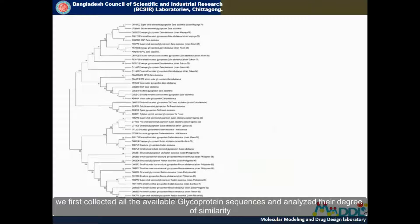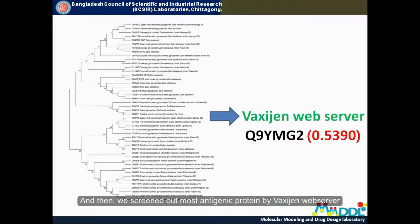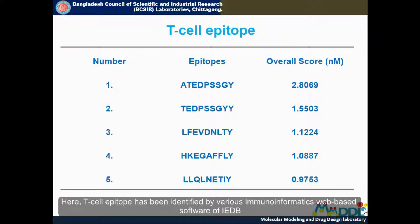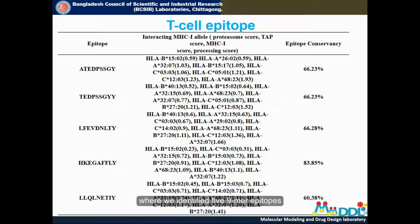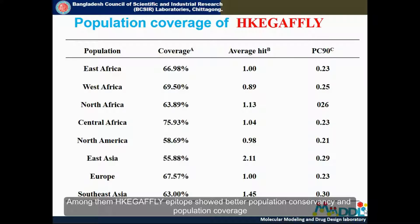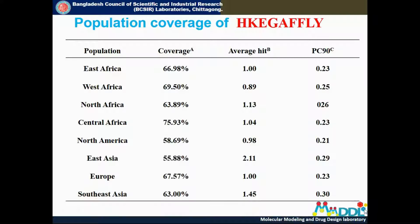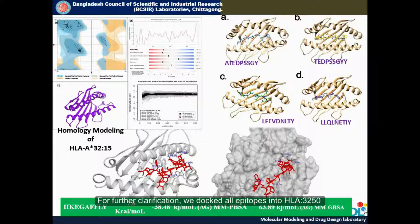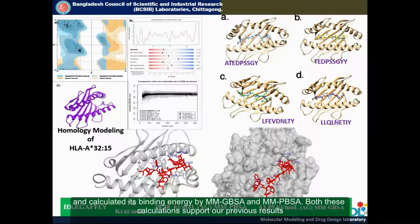Before digging into deep, we first collected all the available glycoprotein sequences and analyzed their degree of similarity. We then screened out the most antigenic protein by the Vaxijen web server. T-cell epitopes were identified by various immunoinformatics web-based software of IEDB, where we identified five MHC epitopes. Among them, these epitopes showed better population contingency and population coverage.